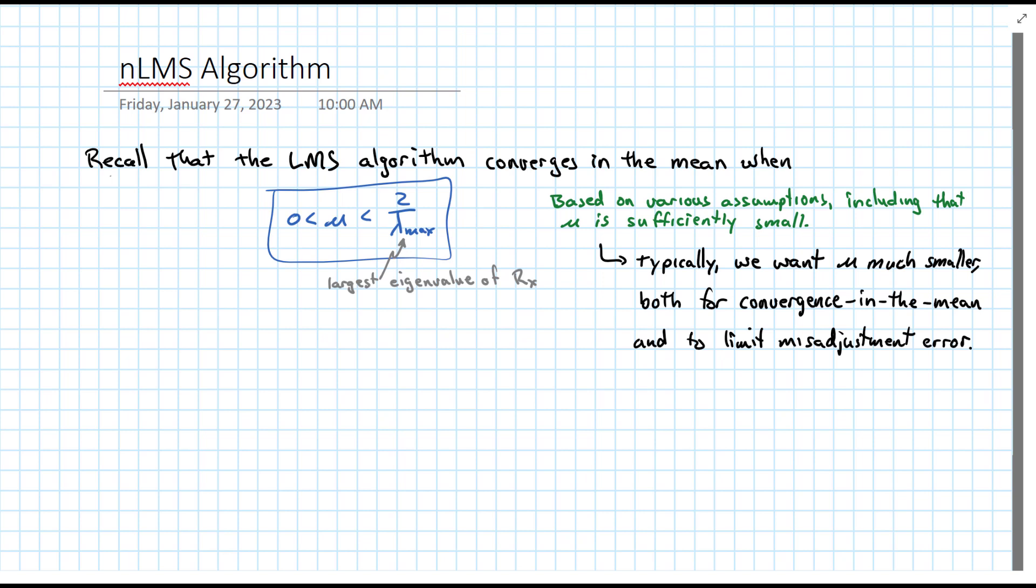Another reason to keep mu small is that we want to limit the misadjustment error. Underlying this is the assumption that we have actually computed Rx, but the whole point of doing the LMS algorithm is that we didn't want to do that. Computing Rx could take many operations, and this is particularly a problem if x is not stationary.